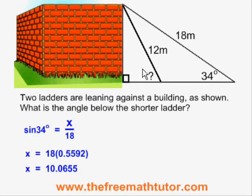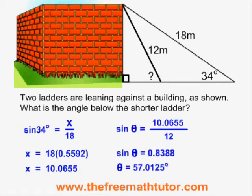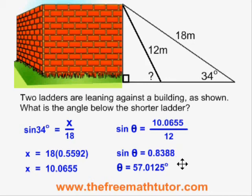Now we switch into the smaller triangle. Knowing that the upright is 10.0655 and the hypotenuse is 12, we can use the SOH formula again. Sine of the unknown angle is equal to 10.0655 over 12. When I solve this, I don't use the rounded value — I use the entire value still sitting in my calculator. I end up with 0.8388 rounded to four places, and using the inverse sine feature of the calculator, the angle under the shorter ladder is 57.0125 degrees.